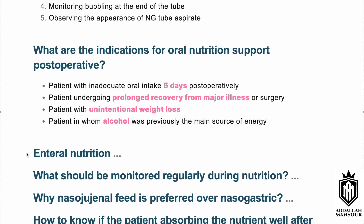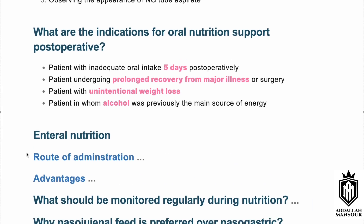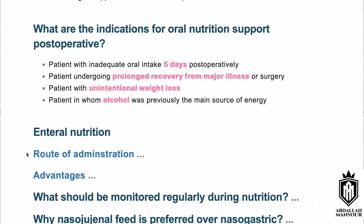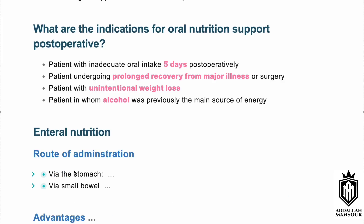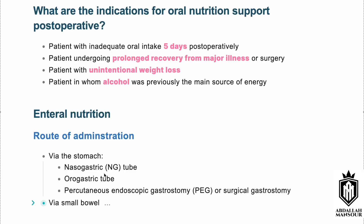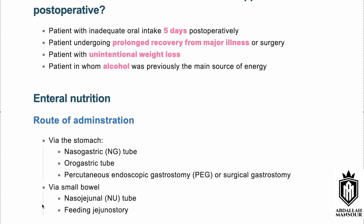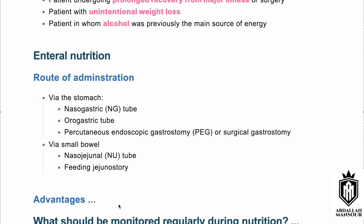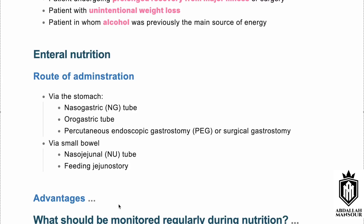Enteral nutrition refers to nutrition delivered using the natural gut spaces — essentially oral feeding. The routes of administration include oral, orogastric tube, nasogastric tube, PEG insertion (percutaneous endoscopic gastrostomy), percutaneous endoscopic jejunostomy, or a feeding jejunostomy via the small bowel.